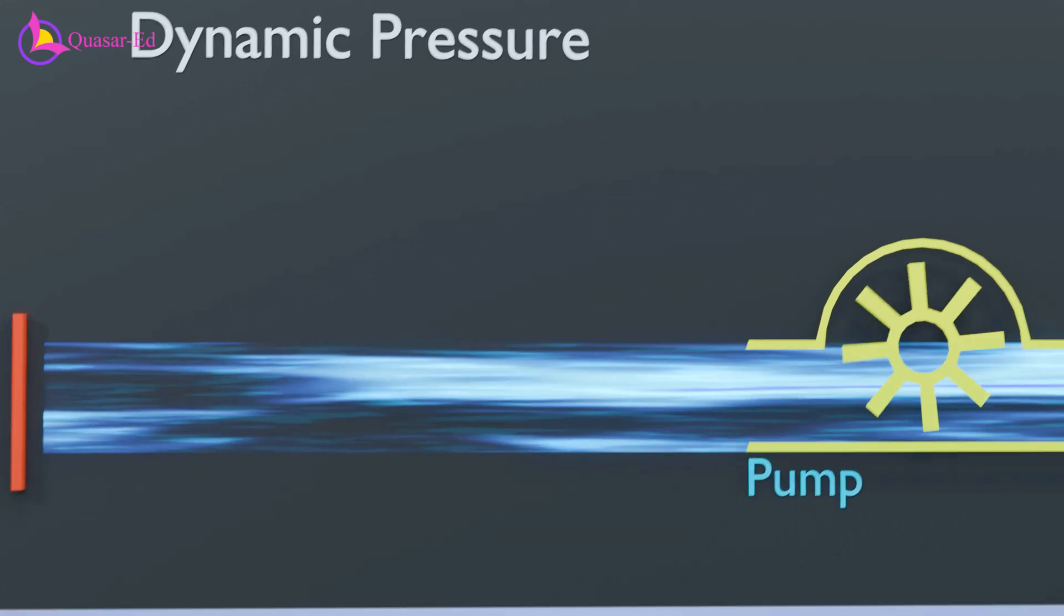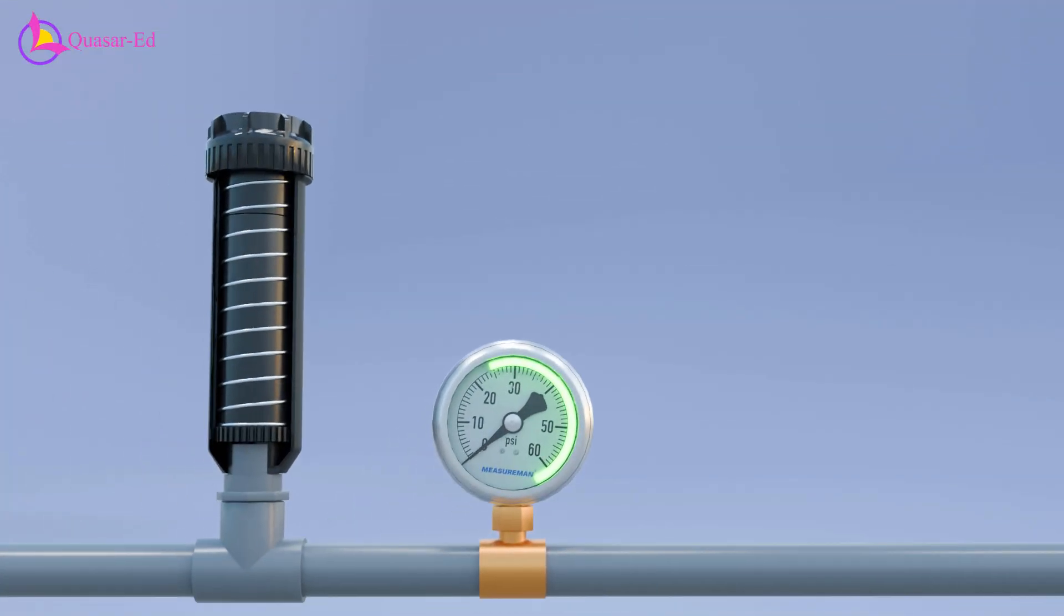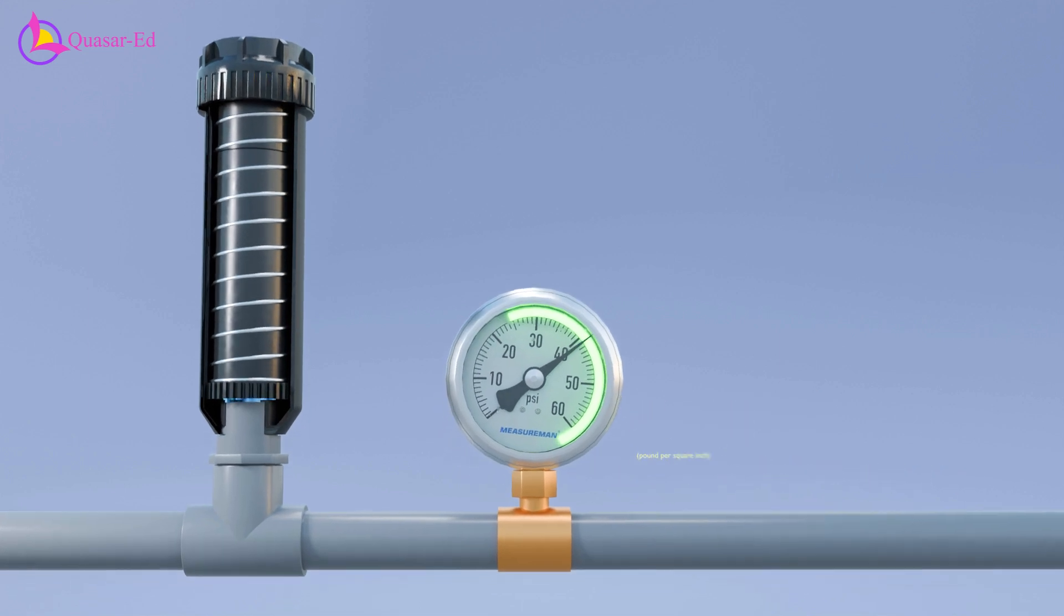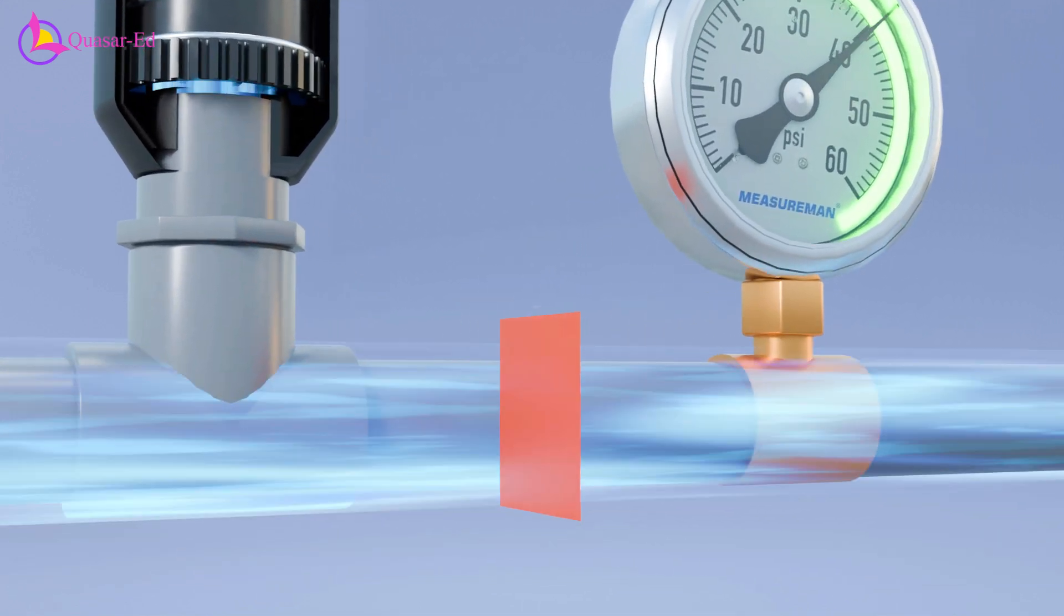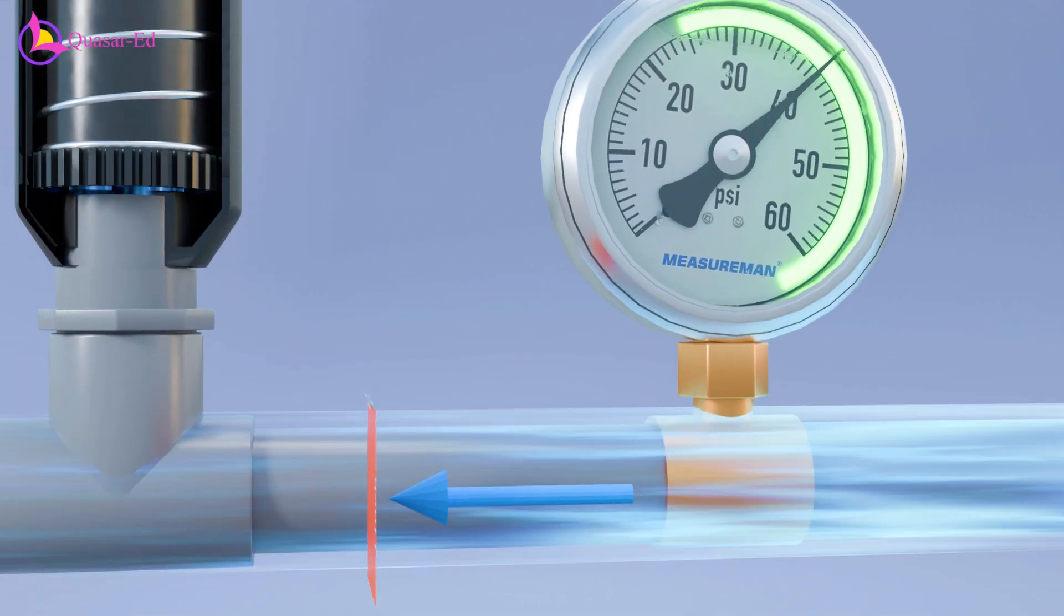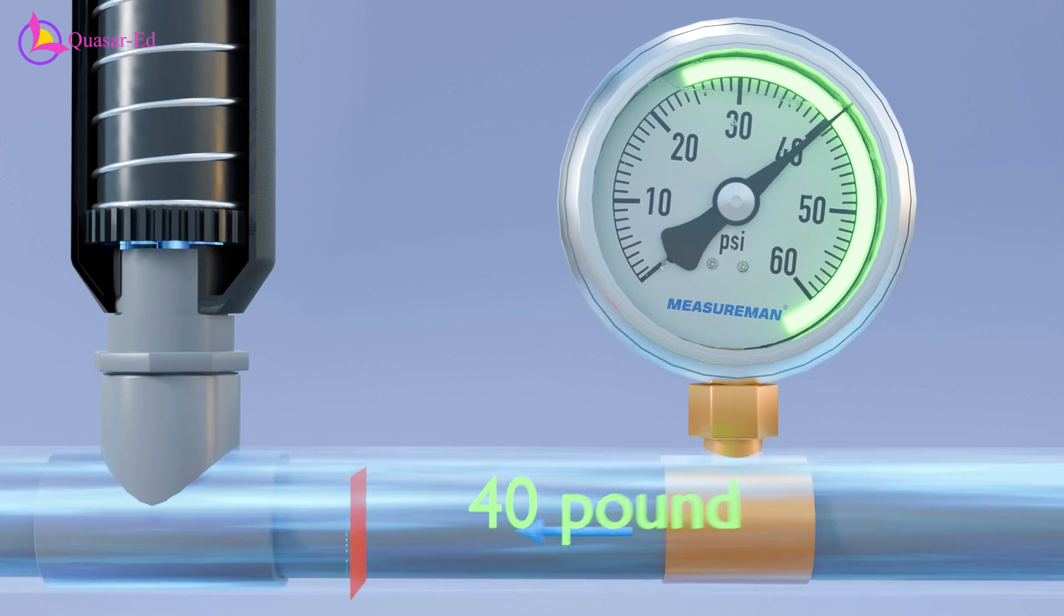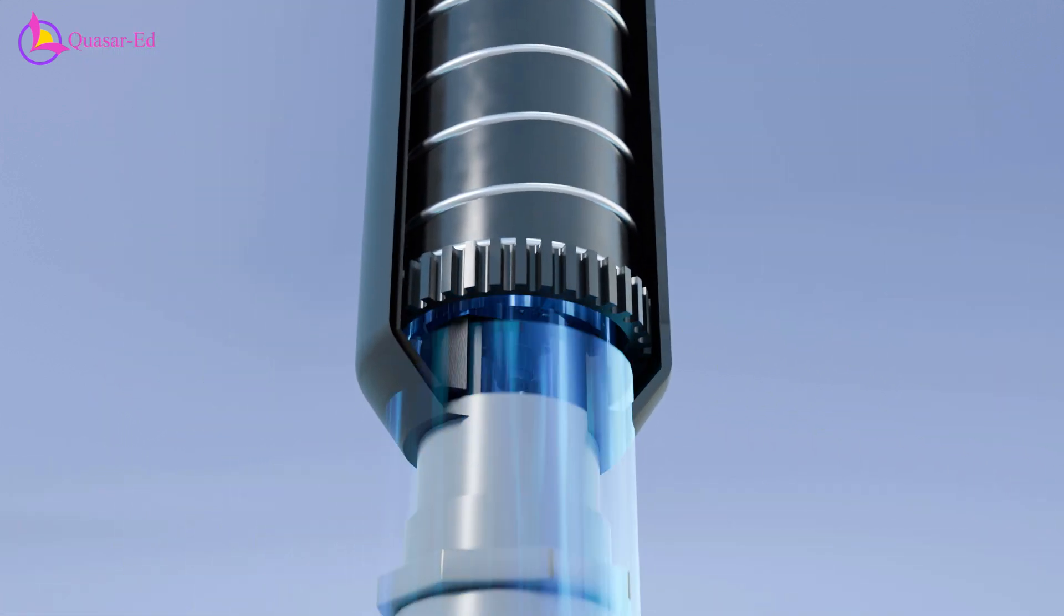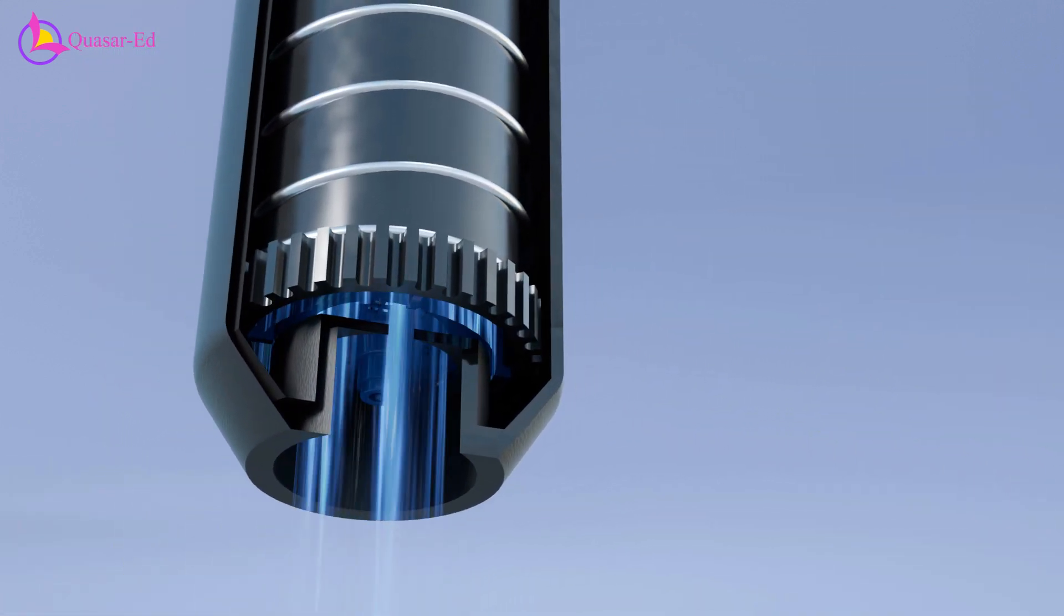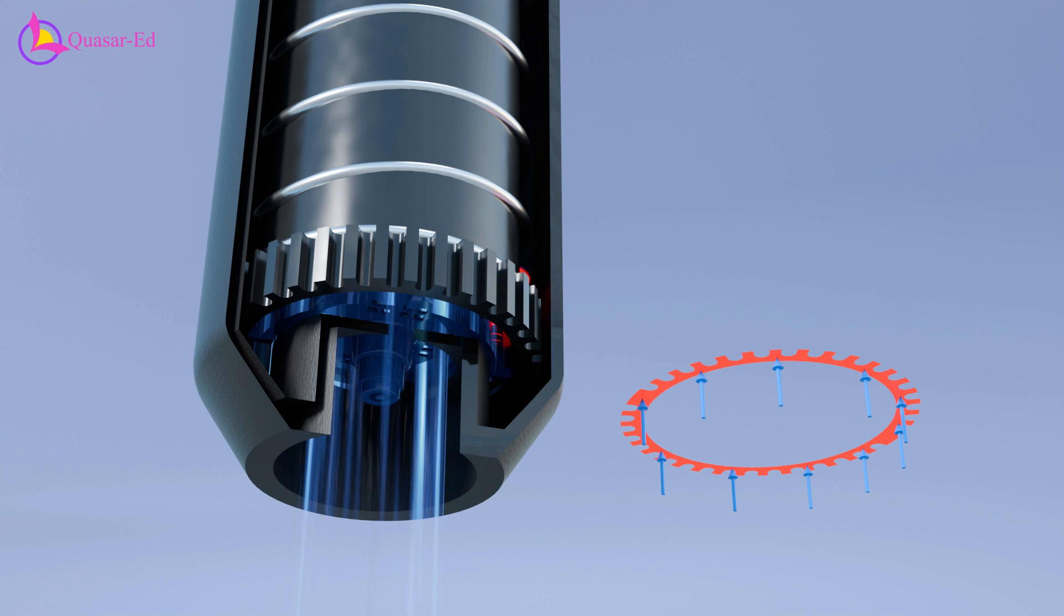This is dynamic pressure. Let's assume the water pressure at the inlet of our pop-up sprinkler is 40 psi. PSI stands for pounds per square inch, meaning that the force exerted on a one-inch square area is equivalent to 40 pounds.